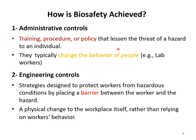Biosafety can be achieved through different domains. First, administrative controls: the university administration and RMO office are involved in training, designing procedures, and making policies that tell workers the working style in labs and address people's behavior. Second, engineering controls: strategies designed to protect workers from hazardous conditions by placing a barrier between the worker and the hazard — a physical change to the workplace itself rather than relying on worker behavior. For example, under COVID-19, stores placed shields between tellers and customers.